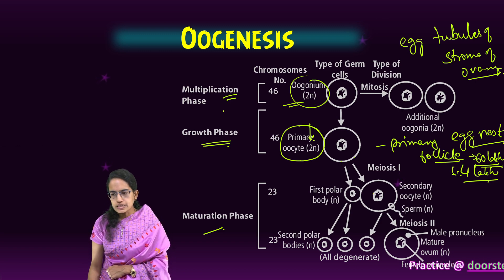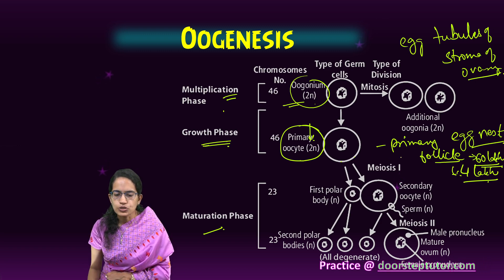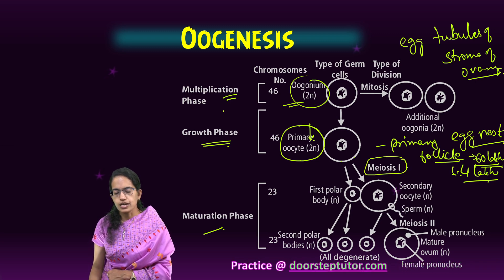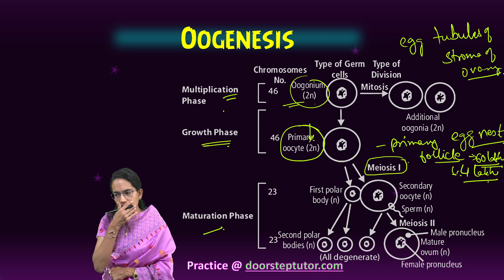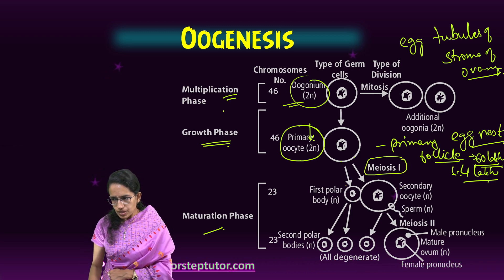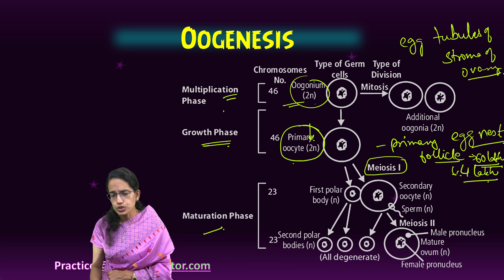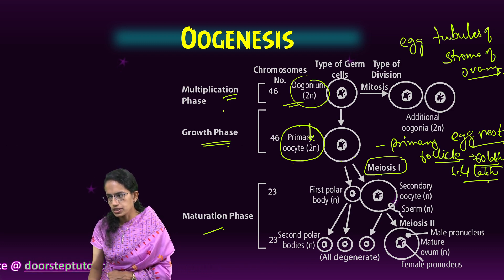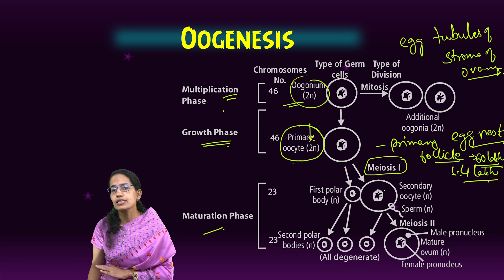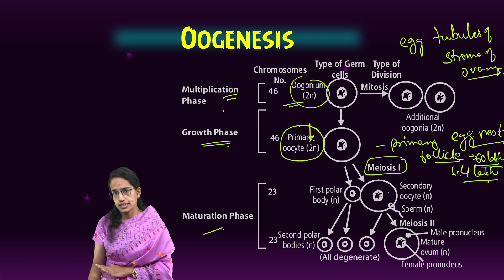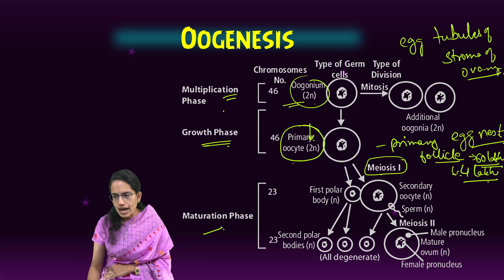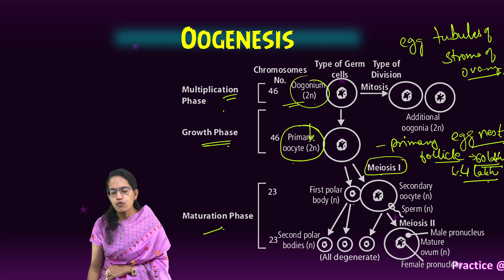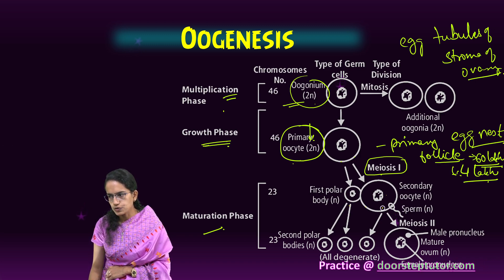The next is the maturation phase, which starts with meiosis. The primary oocyte undergoes meiosis, but the division is arrested at the dikinesis stage of prophase 1. As a result, the first polar body remains and a secondary oocyte is formed.